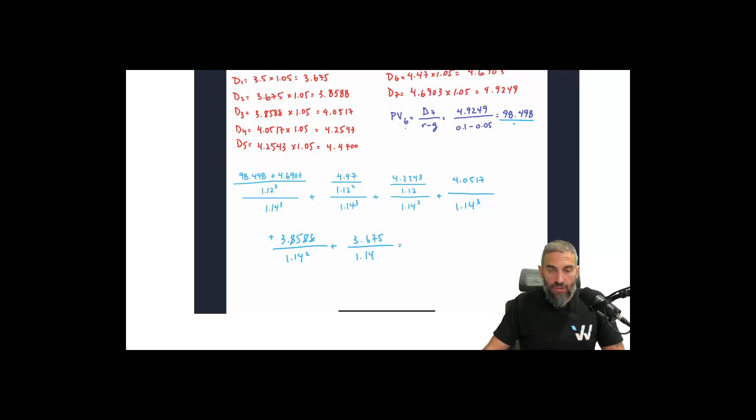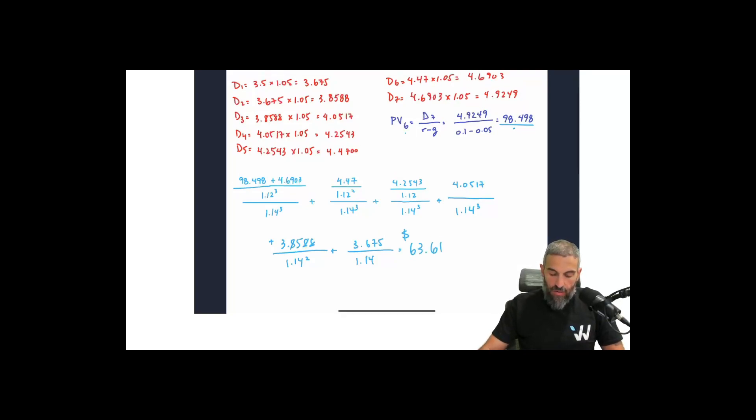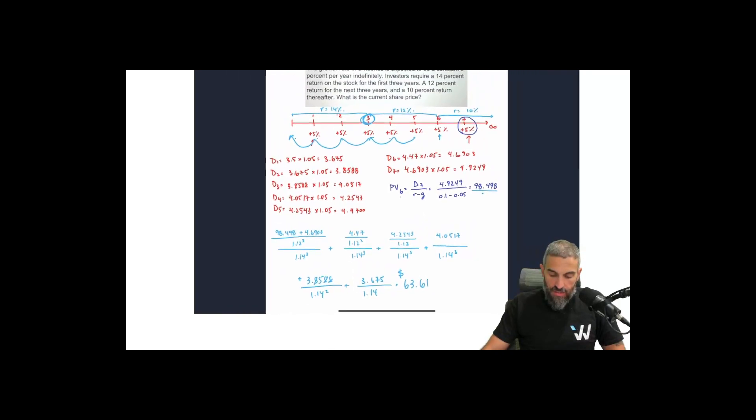And after we punch this whole thing into our calculator, we'll have the price of this stock, the present value of the stock. So assuming I didn't punch that in wrong on my calculator, I got 63.61. You guys will let me know in the comments if you got something different. But that is how I would solve this question.